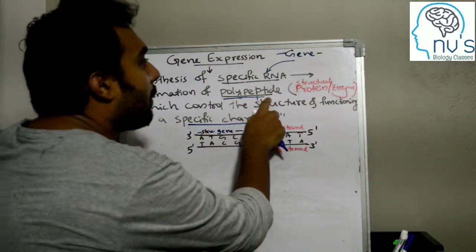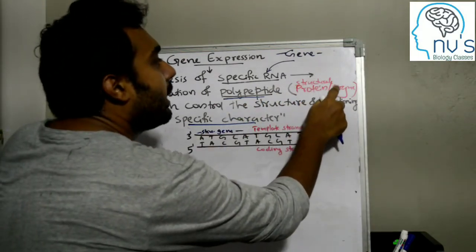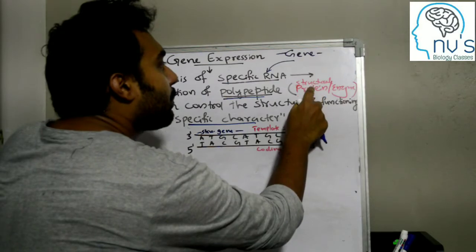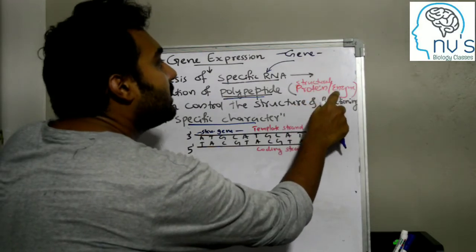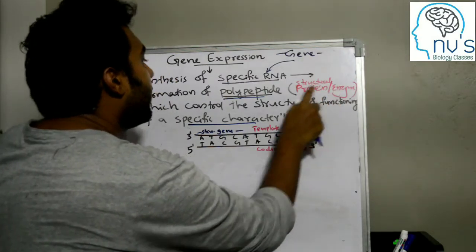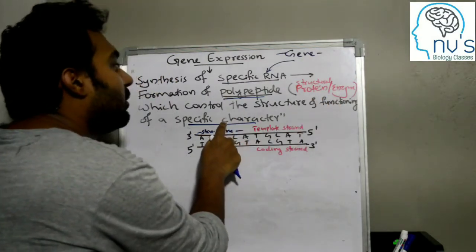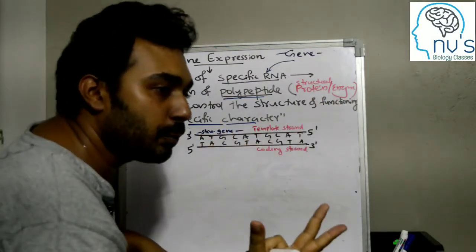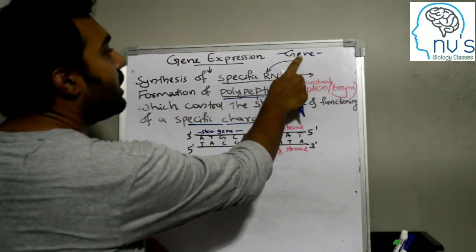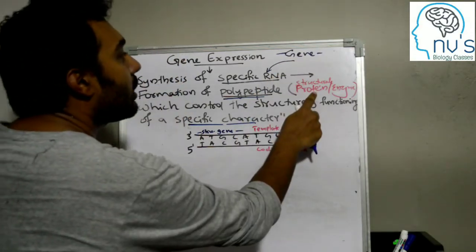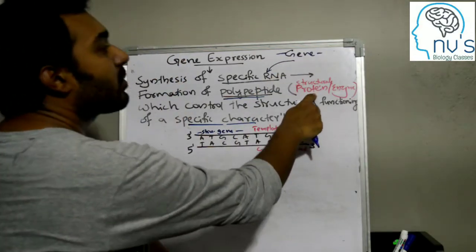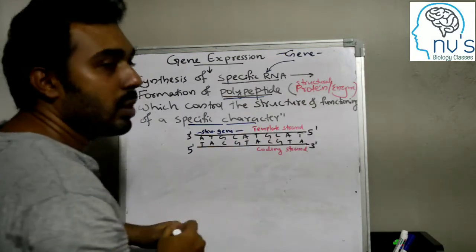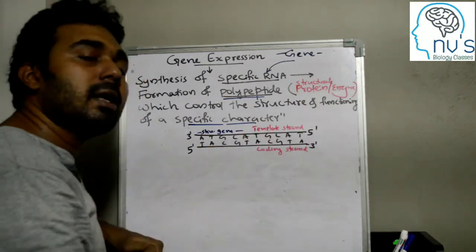Polypeptide is one of the structural proteins that has an enzyme. The structural protein has a specific character. To express the gene, the gene is one of the structural proteins which are an enzyme. It is one of the gene expressions.